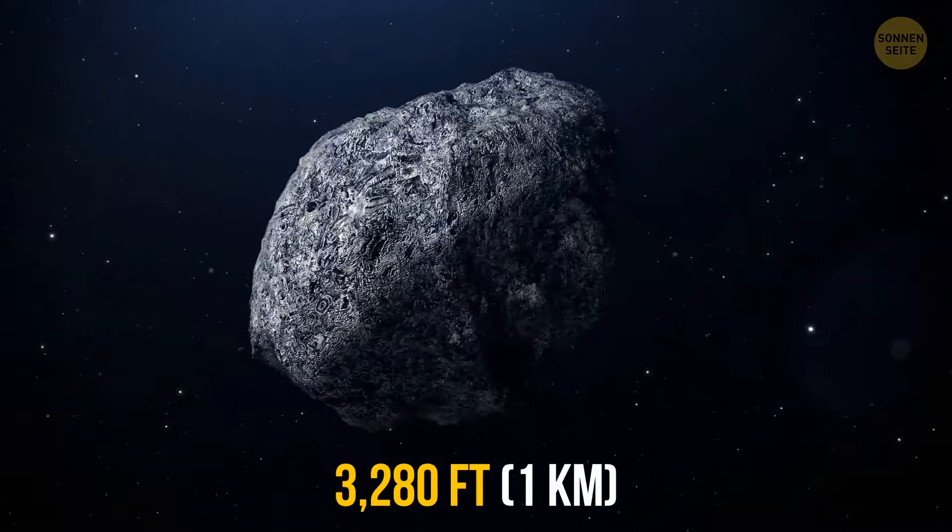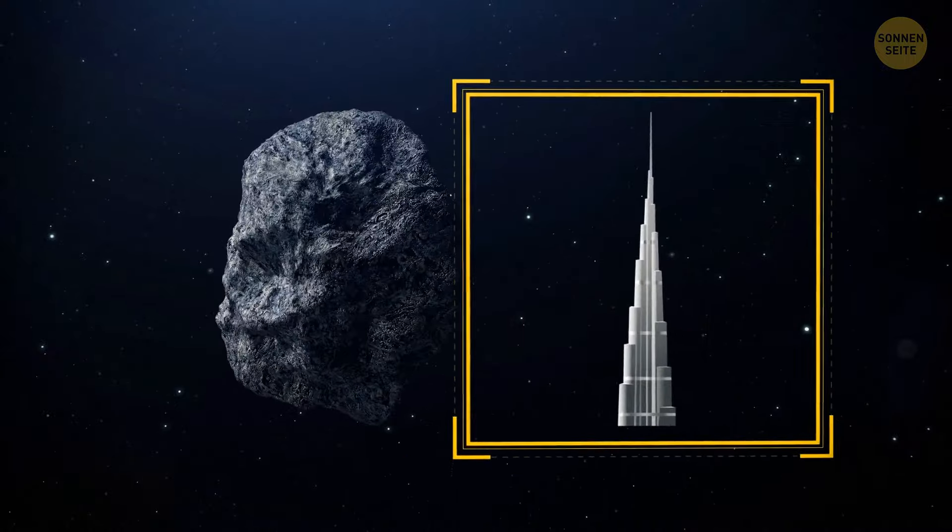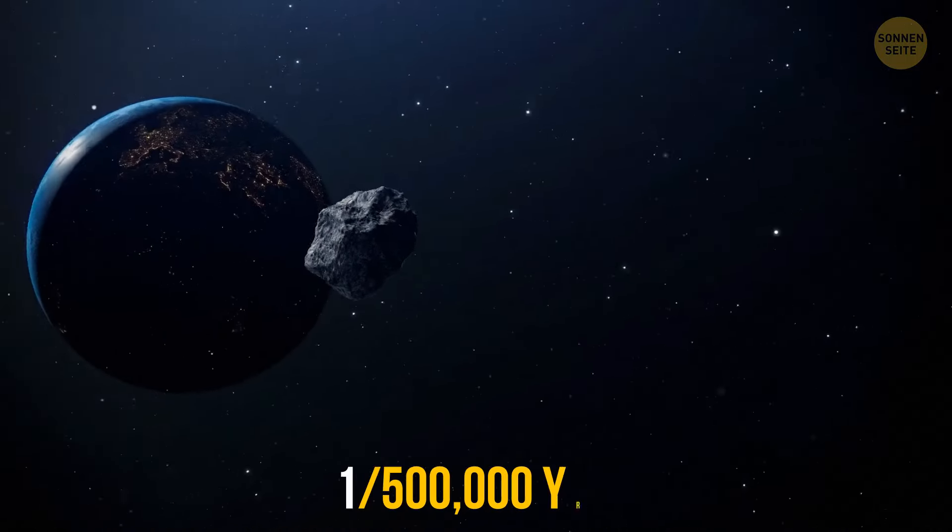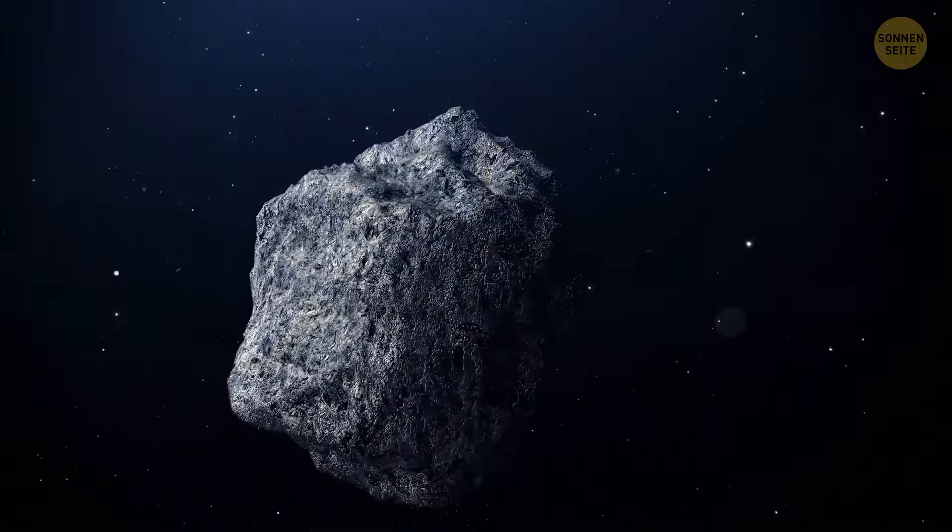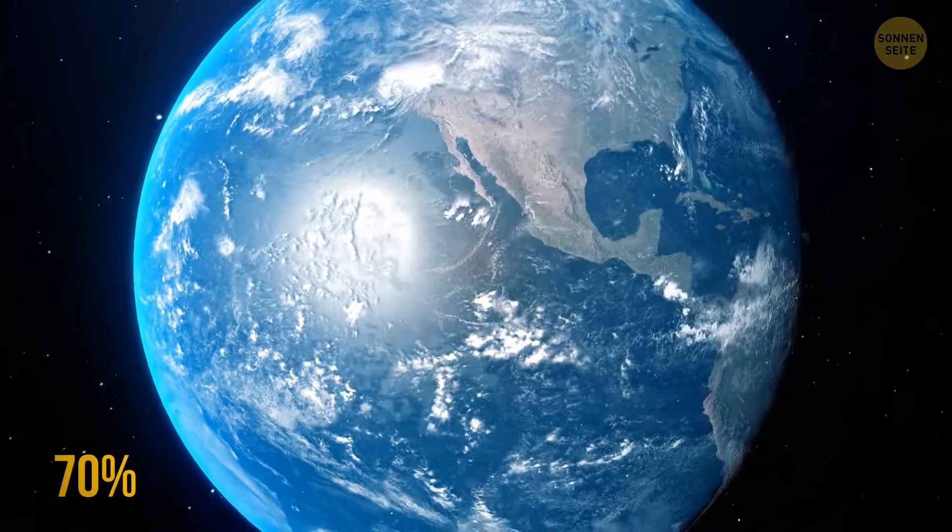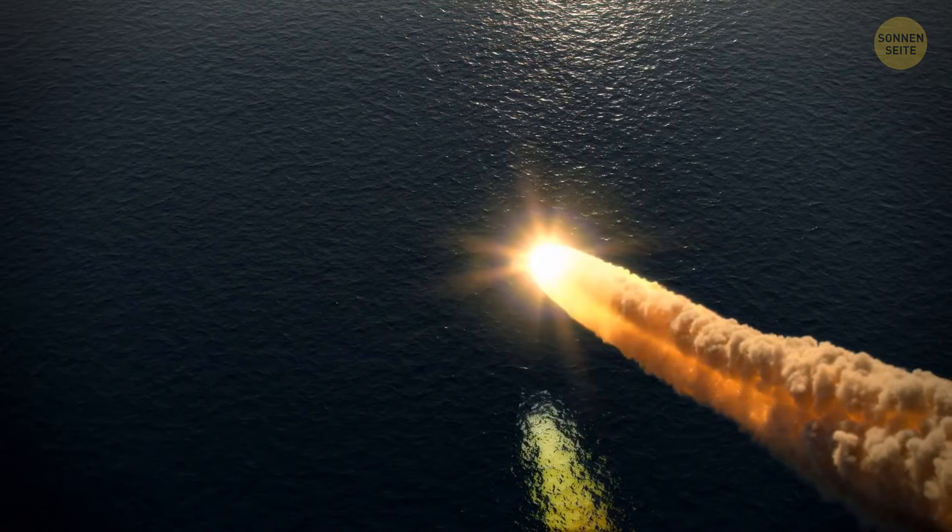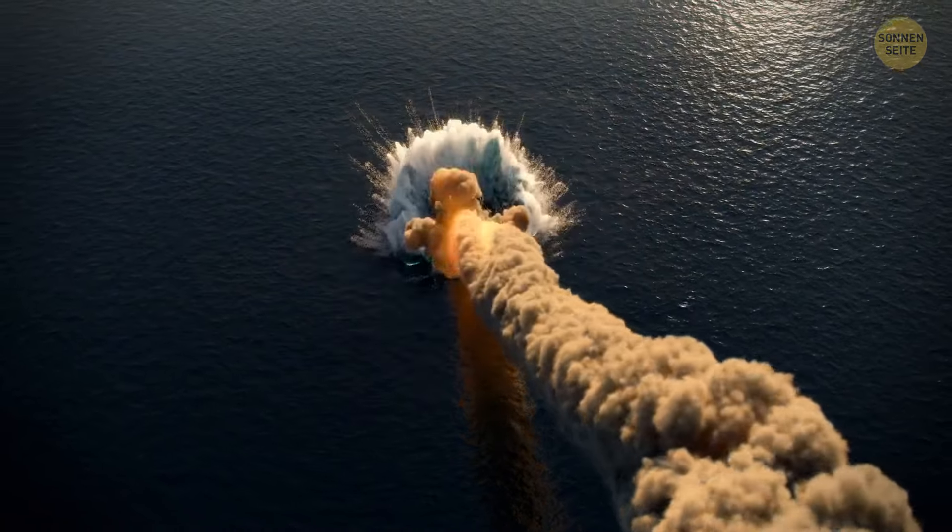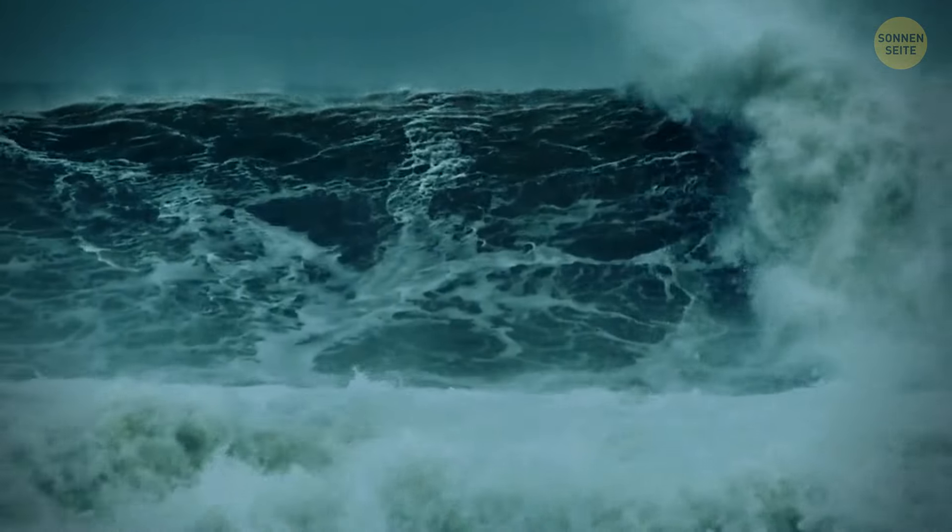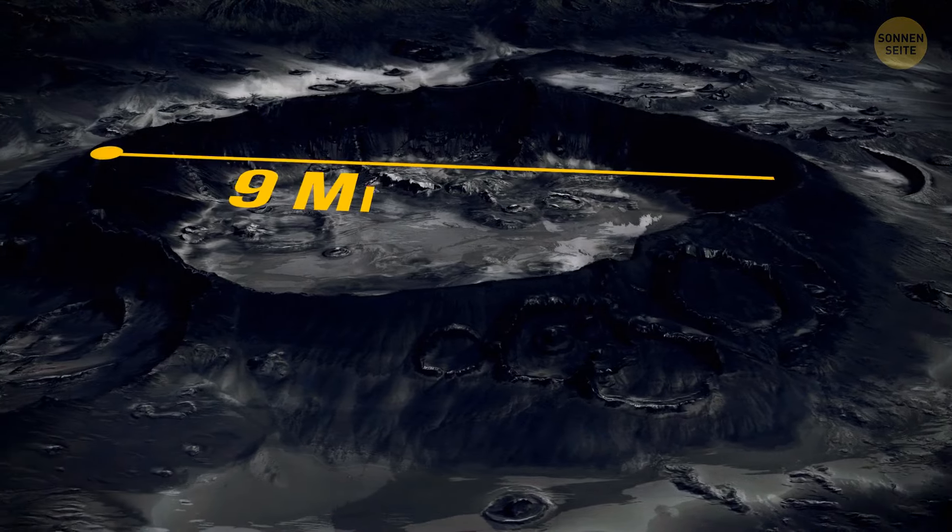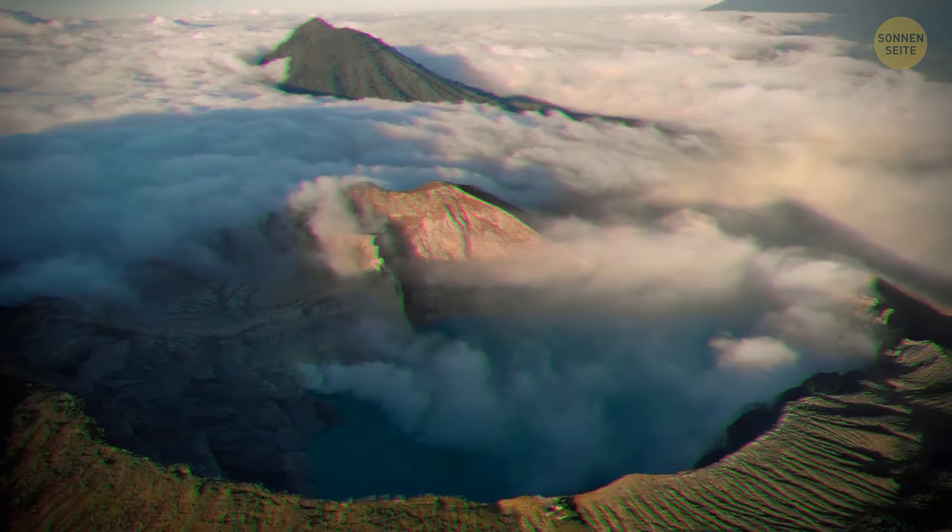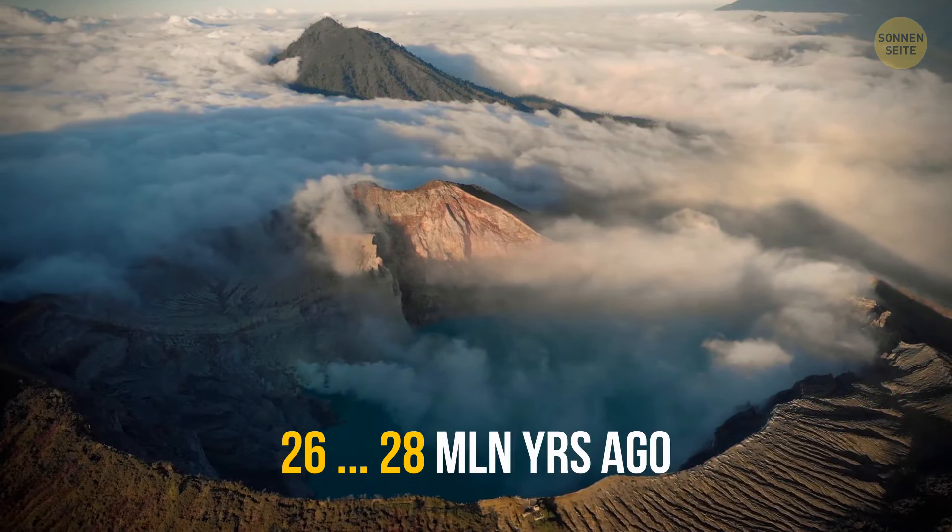3,280 feet. This is higher than the tallest tower in the world, the Dubai Burj Khalifa Tower. Such collisions occur once every 500,000 years. We're not sure when such a collision occurred the last time. 70% of our planet is covered with water. If such meteorites fell into the ocean, it would be extremely difficult to find their traces. But we can assume the possible consequences. The wave would have swept across the entire hemisphere. The crater would be about 9 miles in diameter, and that would be a complete disaster.